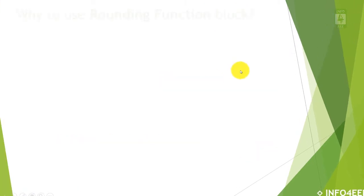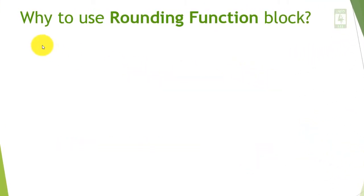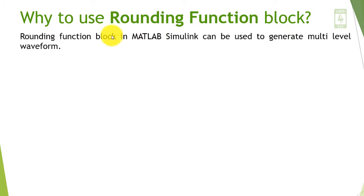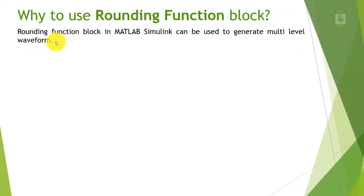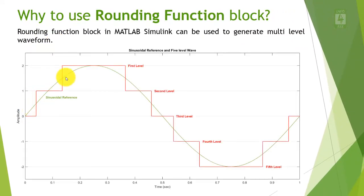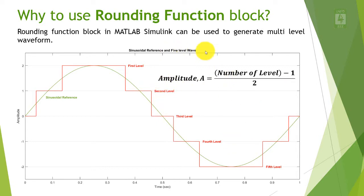First of all, we will discuss why to use the rounding function block. This rounding function block in MATLAB Simulink can be used to generate a multilevel waveform. Suppose we have a sinusoidal waveform and we want to generate a 5-level waveform from it. The number of levels in the 5-level waveform depends upon the amplitude of the sinusoidal waveform, which we can calculate using a formula.